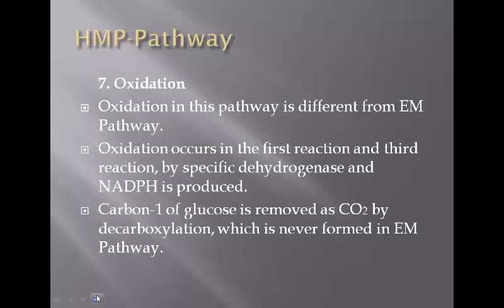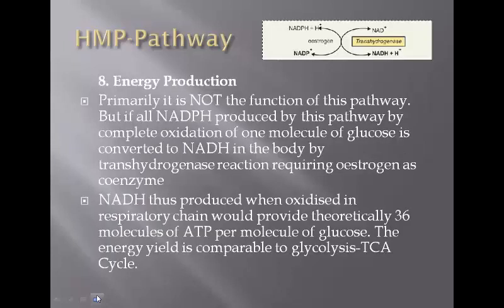Oxidation in the HMP pathway is different from that of the glycolytic pathway. Oxidation occurs in the first and third reactions by specific dehydrogenase enzymes, producing NADPH. One carbon of glucose is removed as carbon dioxide by decarboxylation, which does not occur in glycolysis. The oxidation occurs by dehydrogenation, and the importance of this pathway is also associated with energy production.